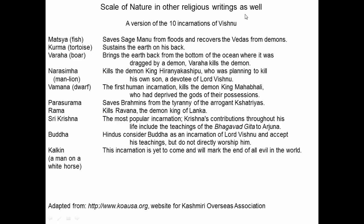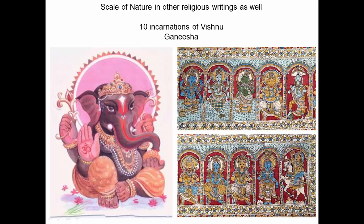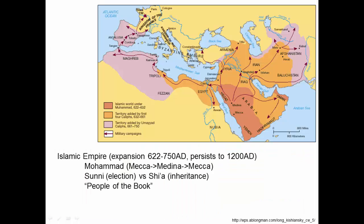This scale of nature appears in other religious writings as well. In India, the ten incarnations of Vishnu — a Hindu god — follow the same ladder: the first incarnation was a fish, second a turtle, third a boar, then half-man half-lion, then a dwarf, then various increasingly educated human forms. It's the same progression: fish to tortoise to boar and then up to humans, depicted in pictures showing fish, tortoise, warriors, and then more educated people.